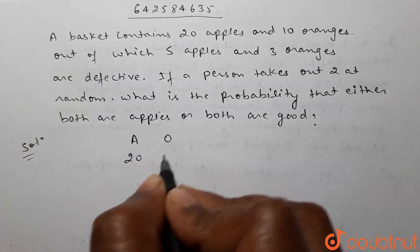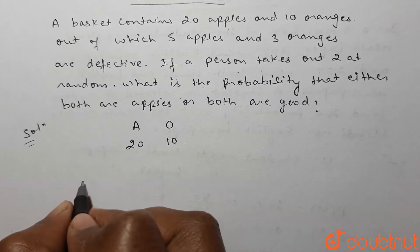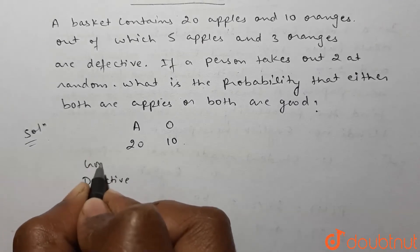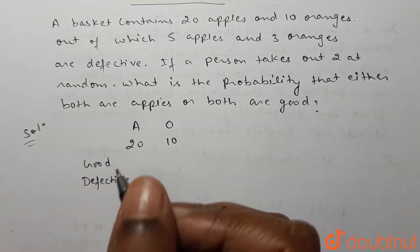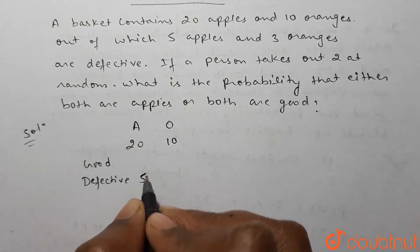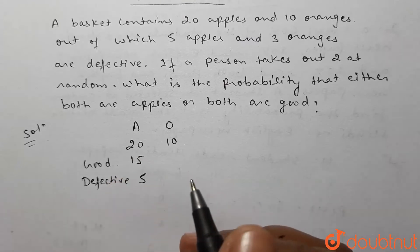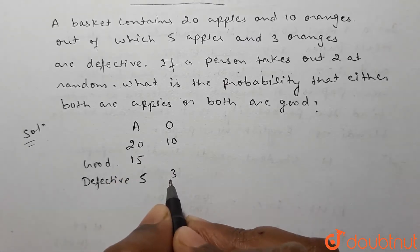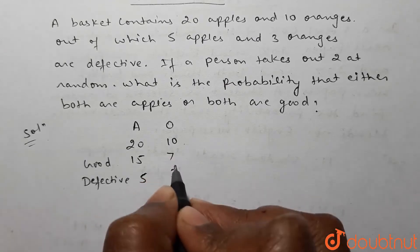In the basket, number of apples are 20 and number of oranges are 10. Out of 20 apples, 5 are defective, so number of good apples are 20 minus 5, that is 15. And out of 10 oranges, 3 are defective, so number of good oranges are 10 minus 3, that is 7.